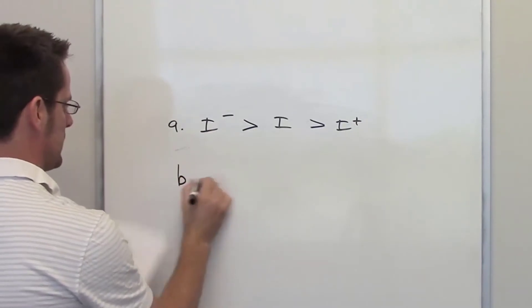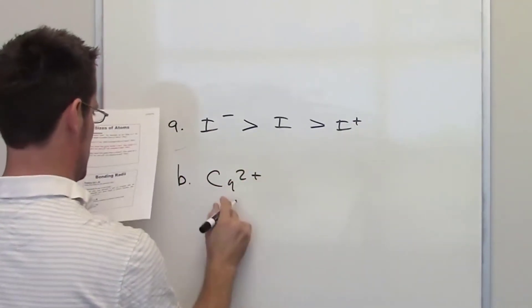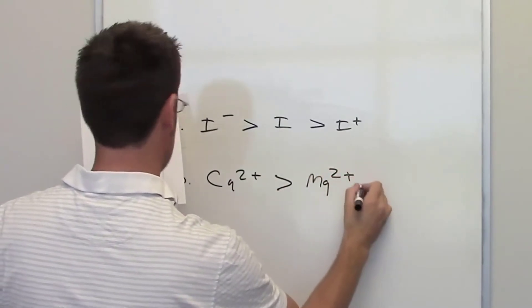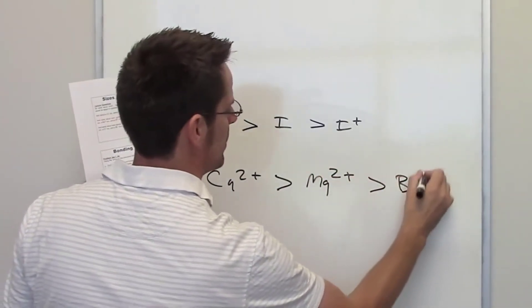In the second problem, we're asked to explain this observation, that calcium cation is larger in size than magnesium cation, which is larger in size than the beryllium cation.